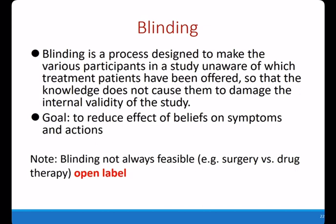The next principle is blinding. Blinding is a process designed to make participants in a study unaware of which treatment patients have been assigned, so that this knowledge does not damage the internal validity of the study. The goal of blinding is to reduce the effect of belief on symptoms and actions. This concern especially arises when a trial evaluates a new drug and the drug manufacturer is financing the evaluation, and those performing the evaluation stand to benefit if the new drug is shown to be more effective.